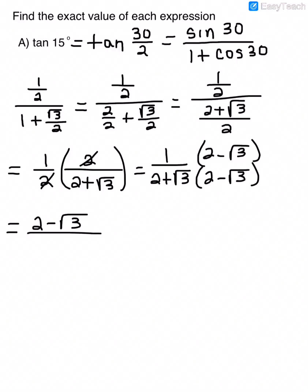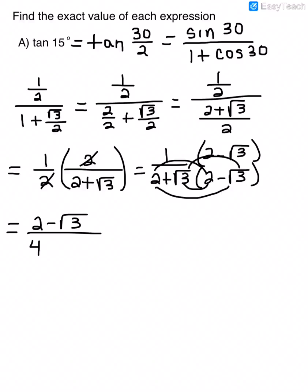When I FOIL the denominator: 2 times 2 gives 4, and because I'm multiplying by the conjugate the middle terms cancel — 2·(−√3) = −2√3 and the inner terms give +2√3, so they cancel. The last terms give −√3·√3 = −3. So the denominator is 4 − 3 = 1, and my answer is simply 2 − √3.